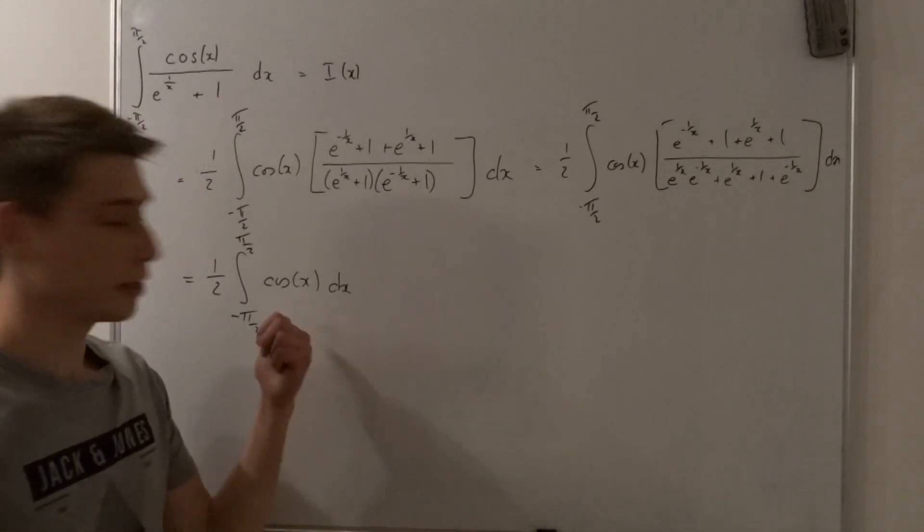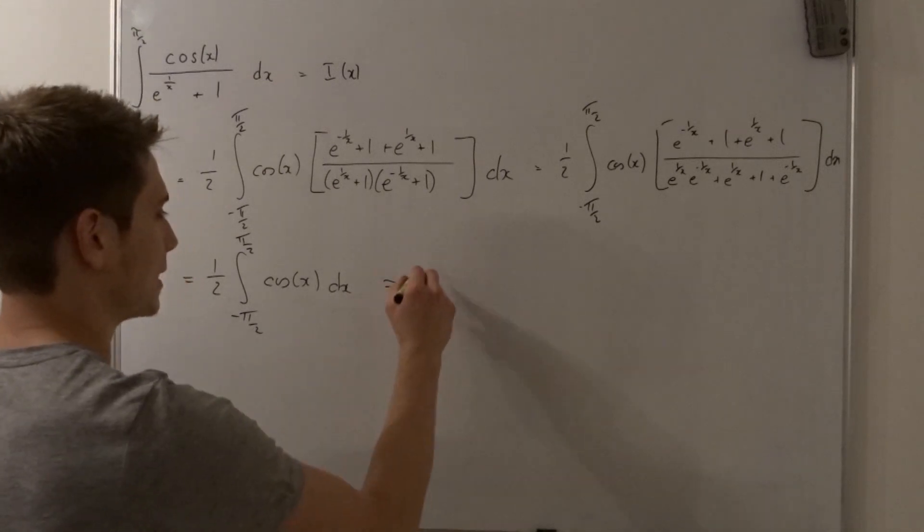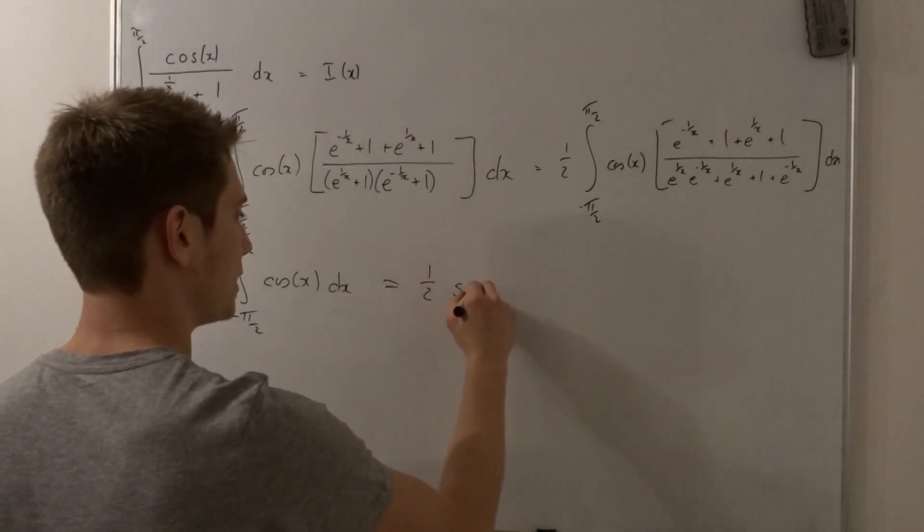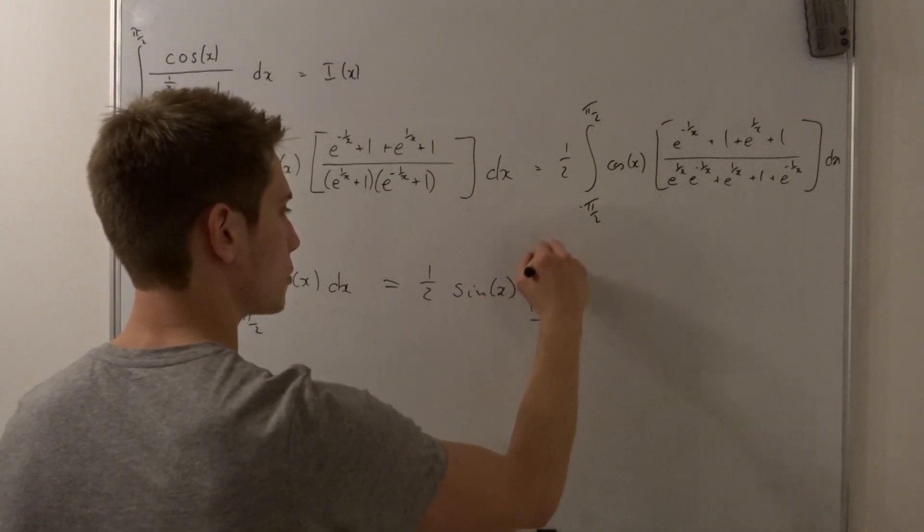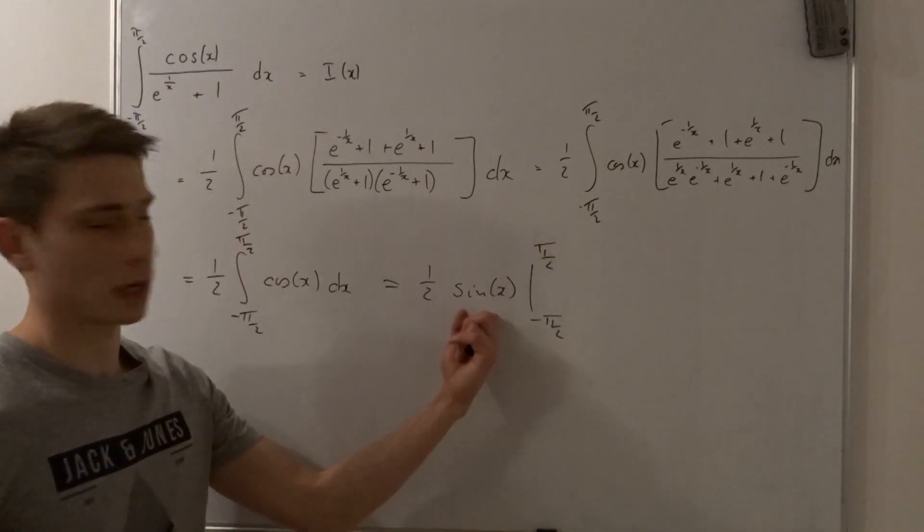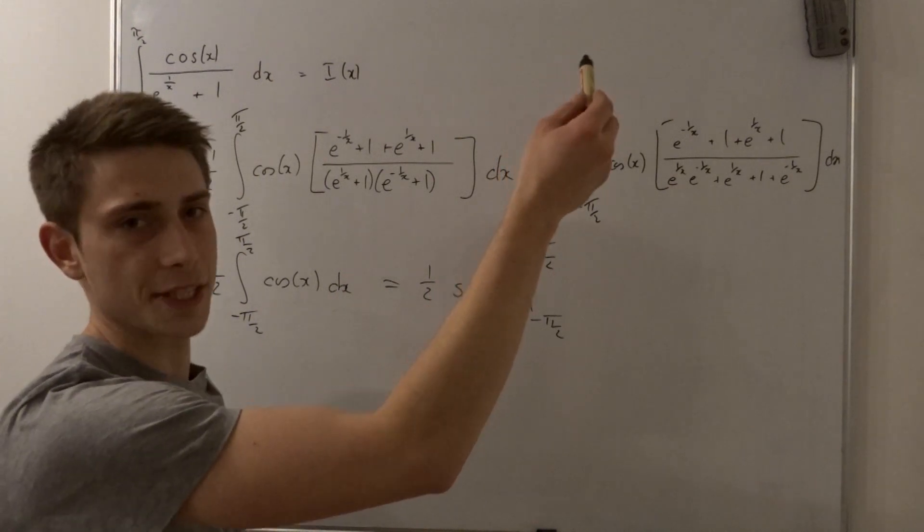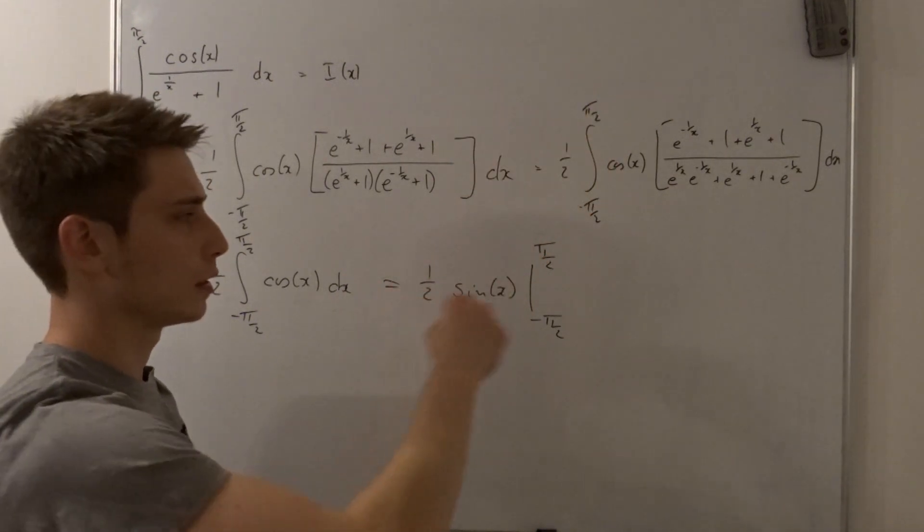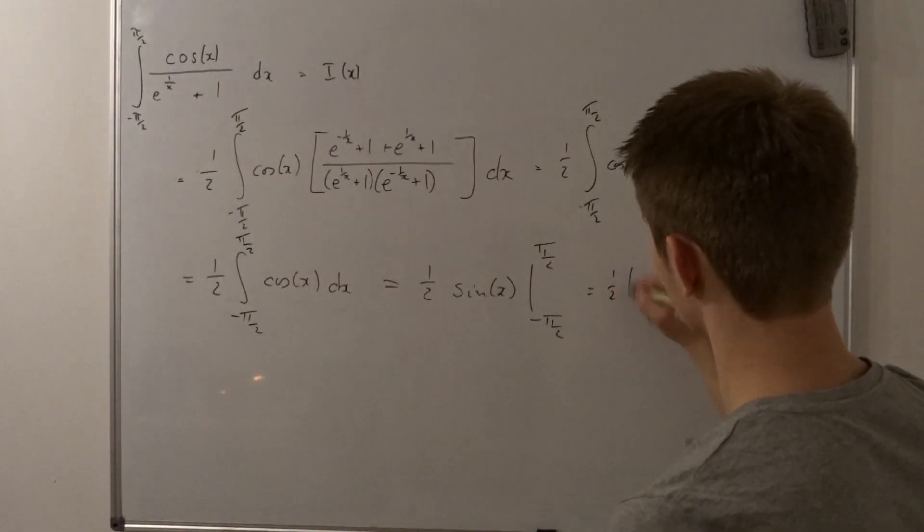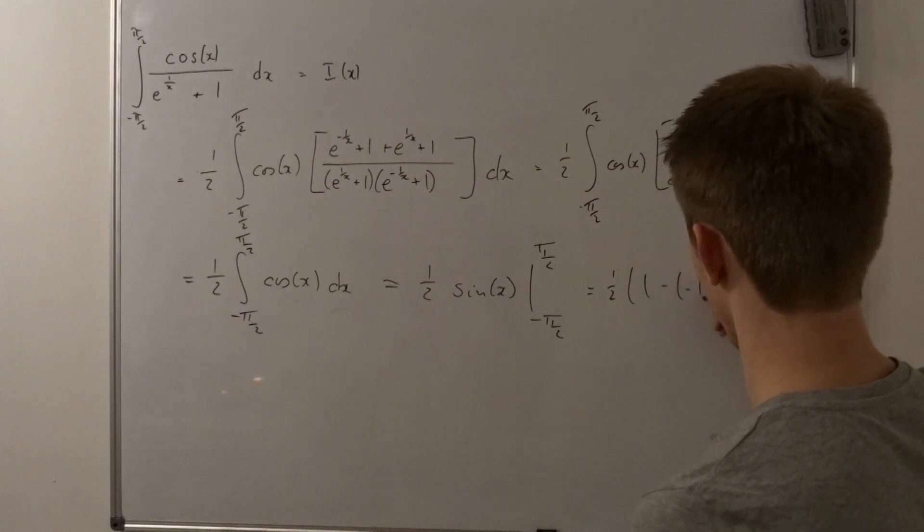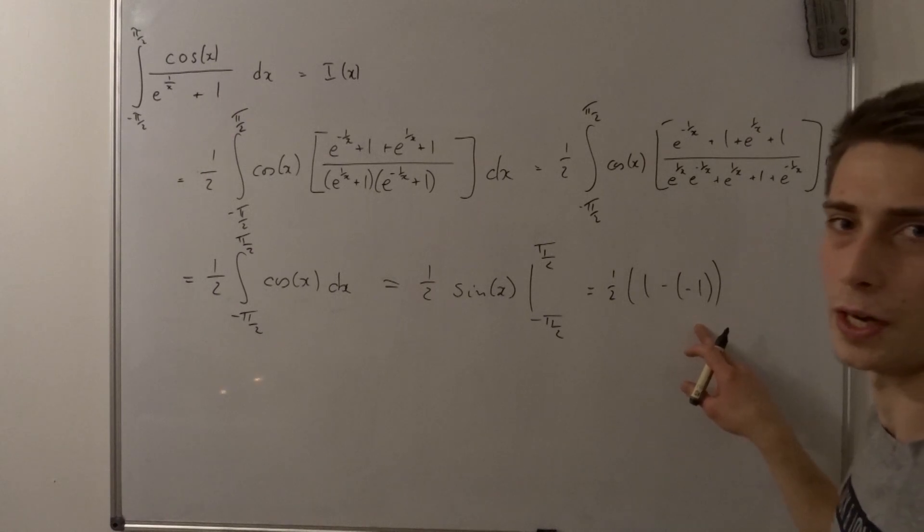And certainly we know how to integrate this. So let's go ahead and integrate this and then we are done. So that's the sine of x from minus pi over 2 to pi over 2. And now we can plug those values in. So sine of pi over 2 we go this way. So well that's just 1 and if we go the other route. So that becomes 1 and that becomes minus 1. So what we end up with is 1 half times 1 minus minus 1. This becomes 1 plus 1. So that's a 2 and 2 times 1 half is just 1.